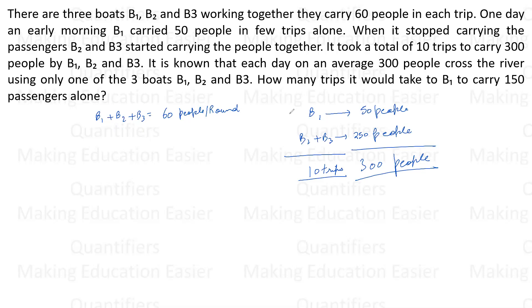So out of 10 trips, let us say B1 is taking N trips. Then B2 plus B3 are taking 10 minus N trips. Total is 10 trips. B1 is the number of people, so the number of people by B1 is equal to B1 into N.